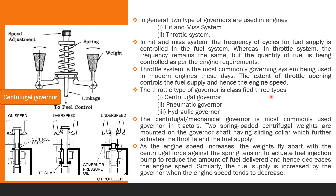Now we will discuss the throttle type of governor — how many types it has. It is of three types: centrifugal governor system, pneumatic governor system, and hydraulic governor system. In all three governor systems, there is one principle — controlling the opening of fuel supply. If load decreases, fuel supply is reduced; if load increases, fuel supply is increased, so that the engine speed remains constant.